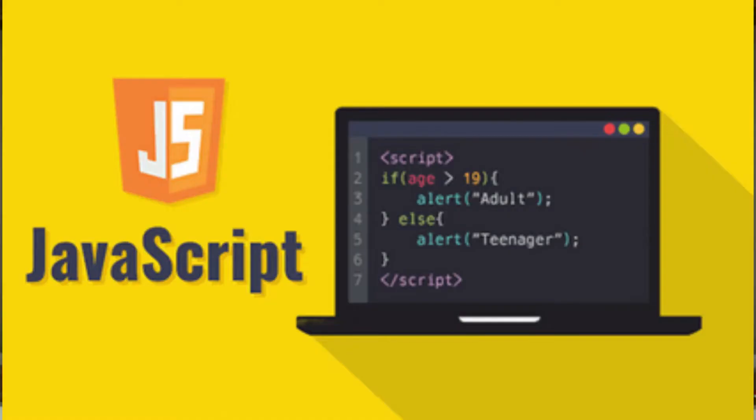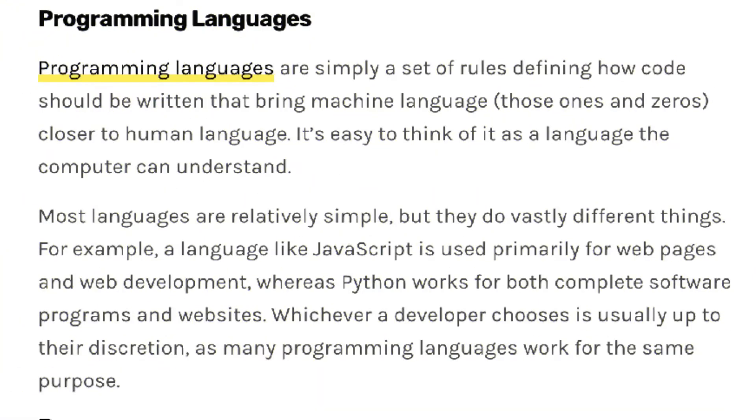Coding languages are simply a set of rules defining how code should be written. Most coding languages are relatively simple, but they do vastly different things. For example, a language like JavaScript is used primarily for online web development, whereas Python works for both complete software programs and websites. The language a developer chooses is usually up to their discretion, as many coding languages can accomplish the same purpose.